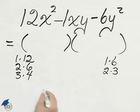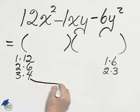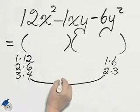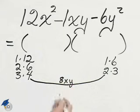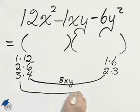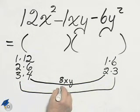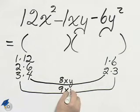No, that's not a good choice. But if I took the 4 times the 2, I would get an 8, and with letters 8xy, and the 3 times the 3 is a 9xy.